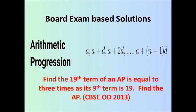Dear students, welcome back to our video class. In this video, we are solving a question that appeared in the CBSE Board Examination 2013. Find the 19th term of an AP is equal to three times its 9th term is 19. Find the AP.